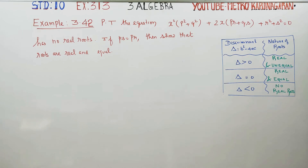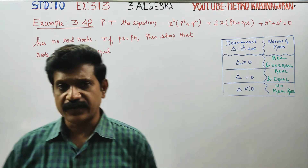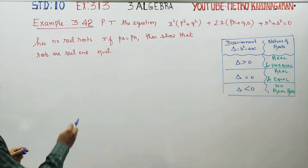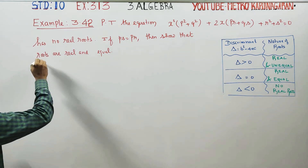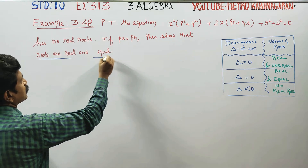Dear 10th standard students, in example 3.42, prove that the equation has no real roots. If PS is equal to QR, then show that the roots are real and equal.